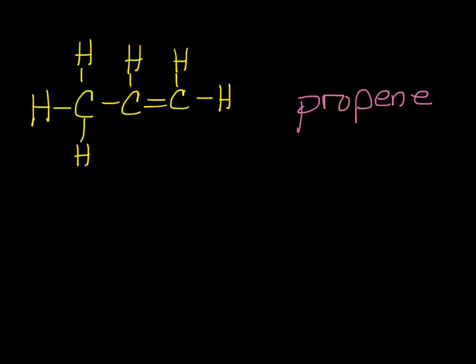Now we need to number the carbons. This time, locating the carbon with the lowest number with a double bond, which means this time we're going to number right to left with this being carbon one, carbon two, and carbon three. The double bond is connected to carbons one and two, and you write down the lowest number. So this is 1-propene.